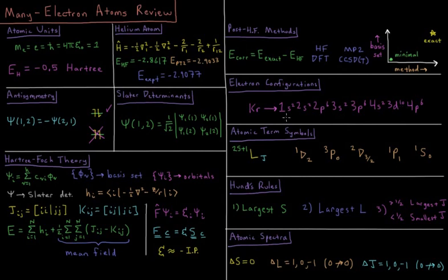And for a given configuration, we can represent those states by what are called atomic term symbols. So just as we mentioned for the hydrogen atom, you have 2 times s plus 1, the multiplicity, 1 being a singlet, 2 being a doublet, triplet, quartet, et cetera.